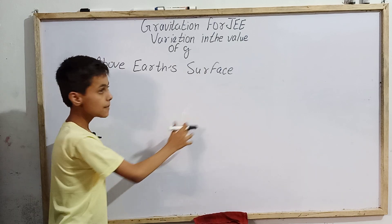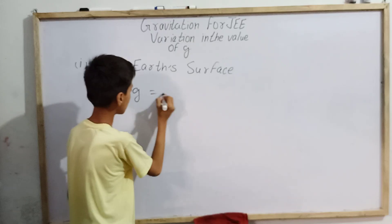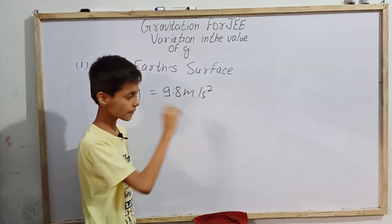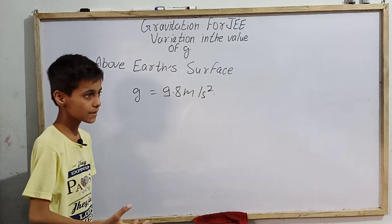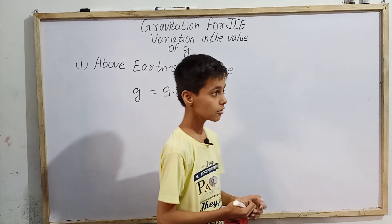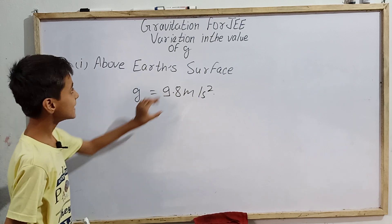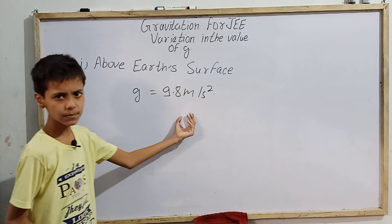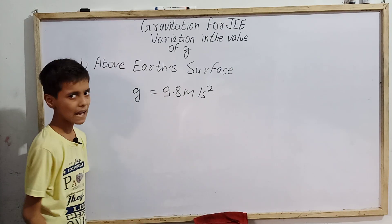Above Earth's surface means as we go higher from the Earth's surface. For example, the value of g is 9.8 meters per second squared, but that is near the surface of Earth. As we go higher, there is a variation in this 9.8. This is why in some questions related to gravitation, we may take the value of acceleration due to gravity as 10 meters per second squared. The value of g may vary from place to place — generally near Earth's surface it is 9.8, but sometimes it may become 10 or 9.9 meters per second squared.